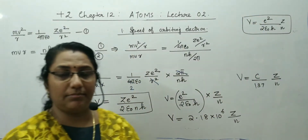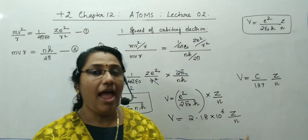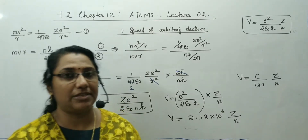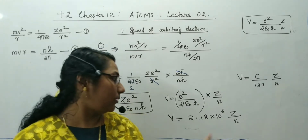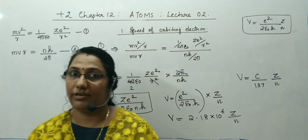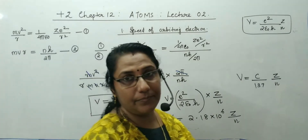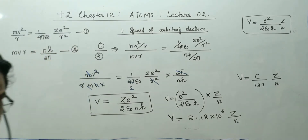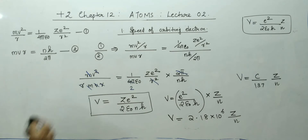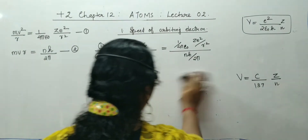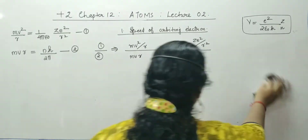For hydrogen atom, atomic number is 1. Since n is also 1, only one electron is present in the first orbit. What will be the speed? 2.18×10⁶ m/s. Similarly, we can go to the radius.